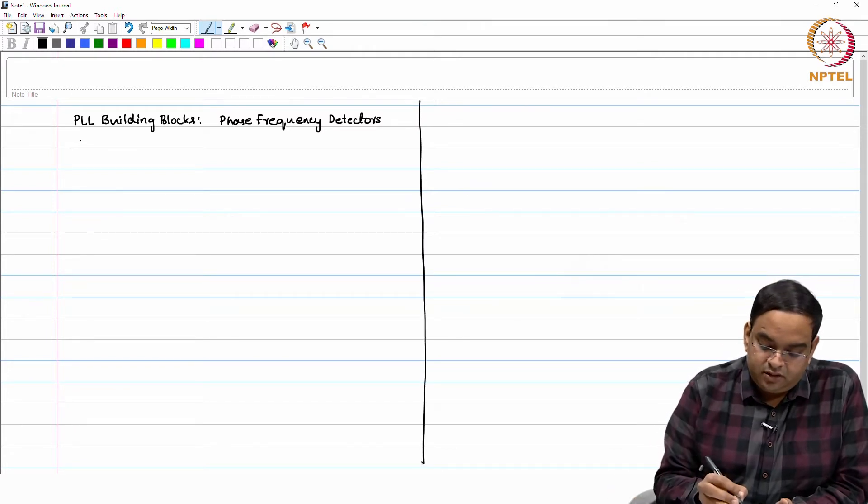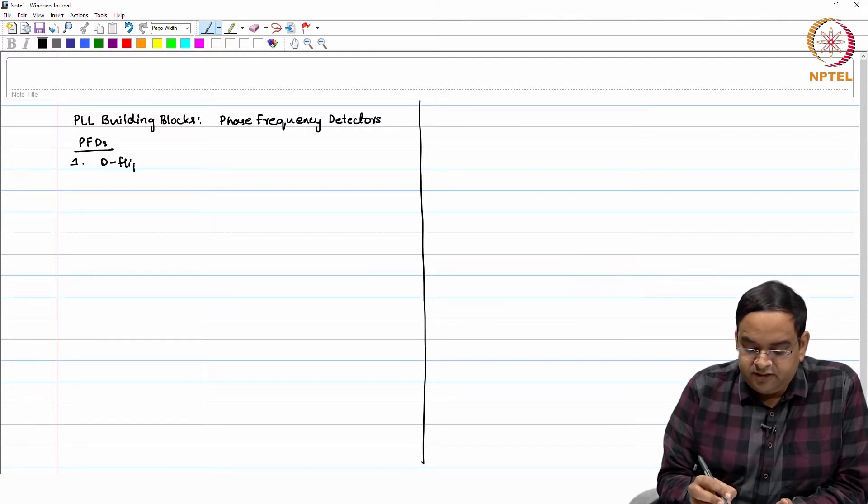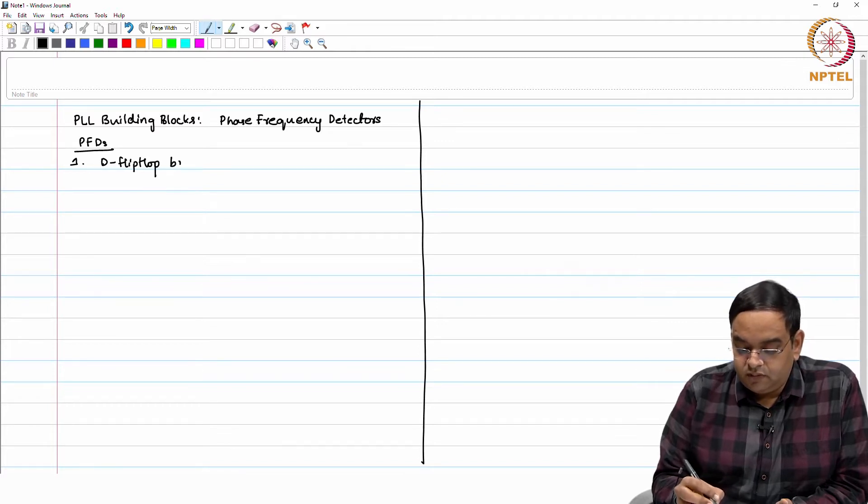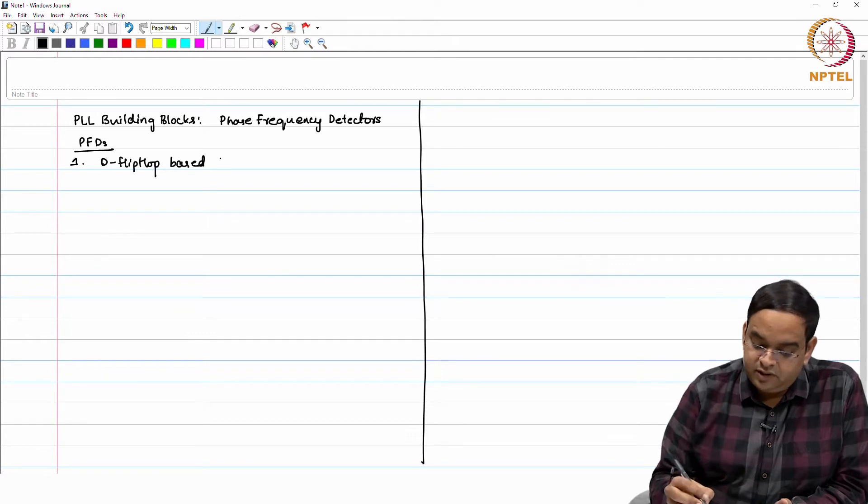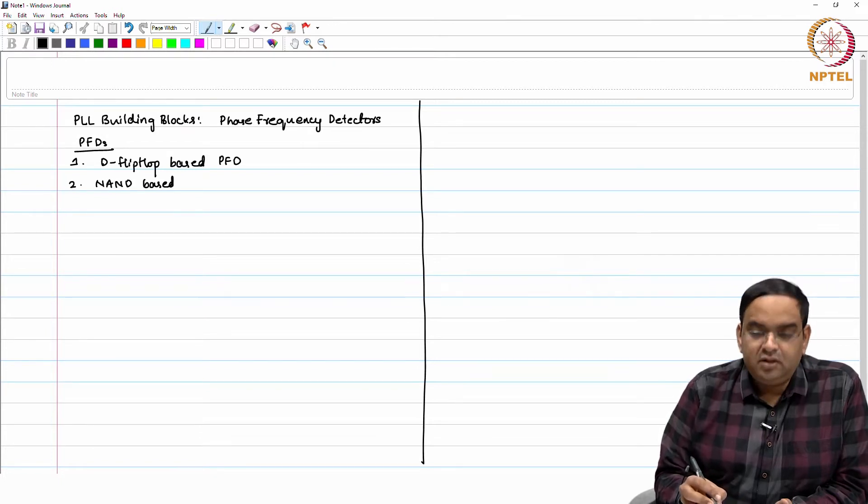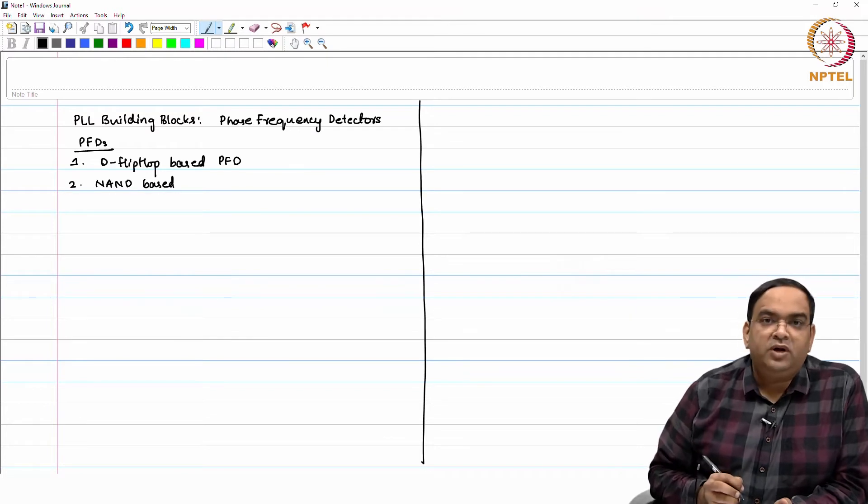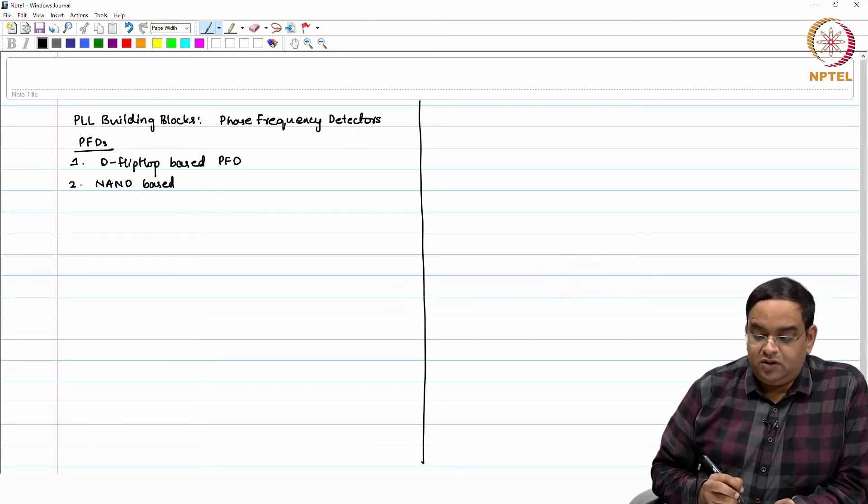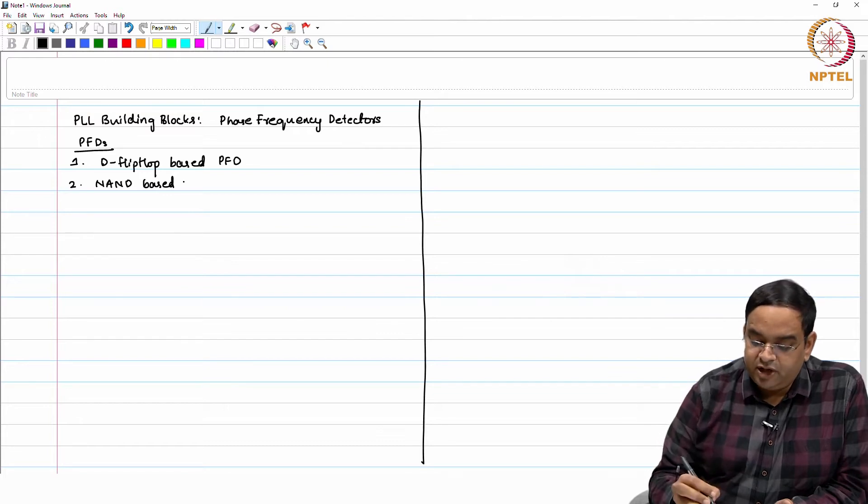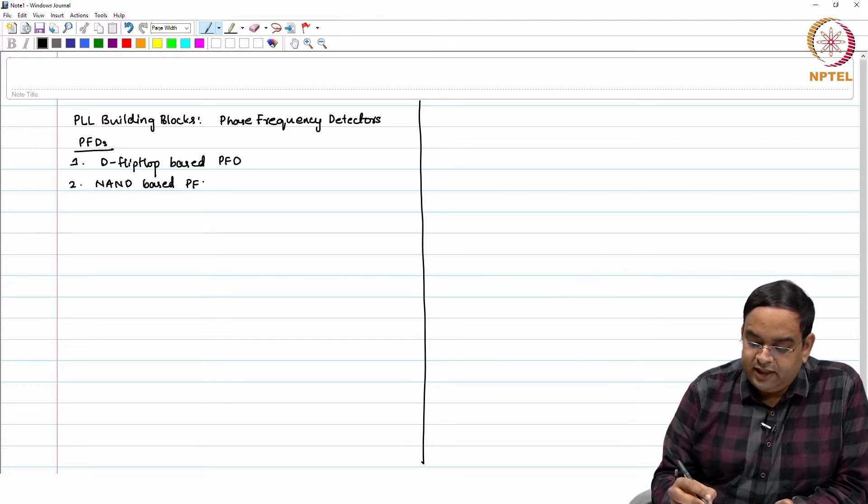Let me just summarize. You have seen D flip-flop based - you know what kind of problems you have with D flip-flop based PFD. You have seen NAND based PFD, and there were two different architectures for that: one with all NAND gates and another with a slight modification on that NAND gate.